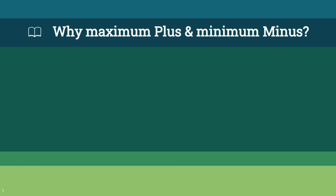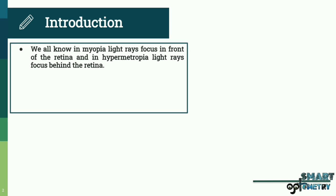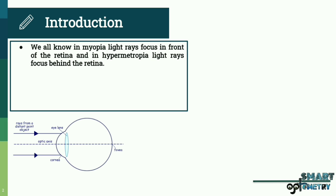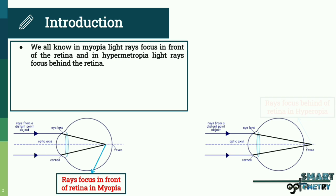Today we will discuss why we always give maximum plus in hypermetropia and minimum minus in myopia. We all know that in myopia light rays focus in front of the retina, and in hypermetropia light rays focus behind the retina.